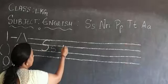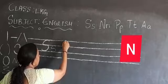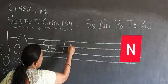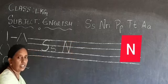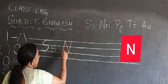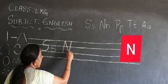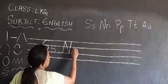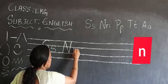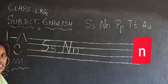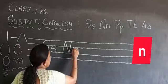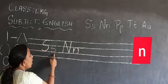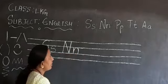After S comes N. Capital N: standing line from the first line to the third line — you should touch these two lines. Standing line, and one more standing line, and a slant line. That becomes capital N. For small N: standing line and a curve or half circle — that becomes small N. Small N should be written within these two lines. So we have: capital S, small S, capital N, small N.